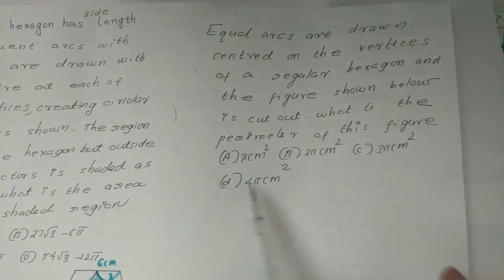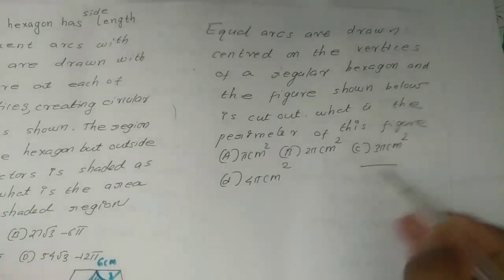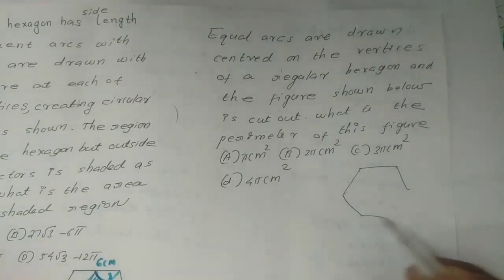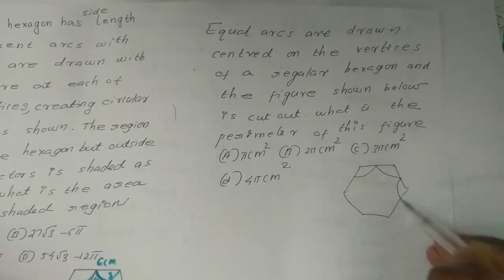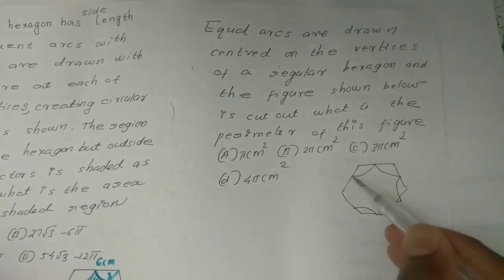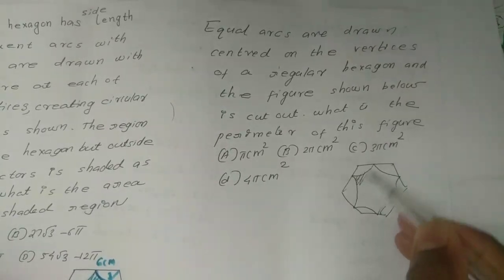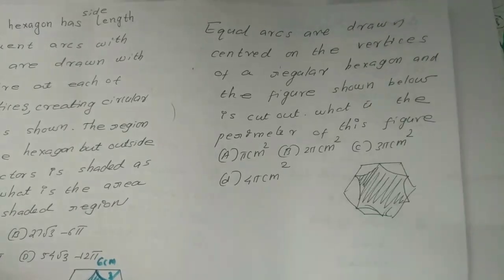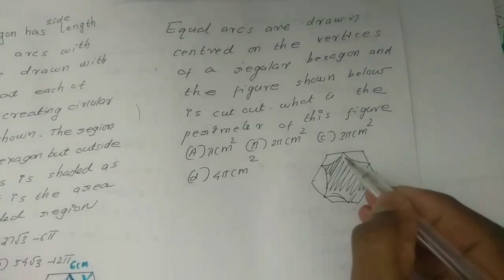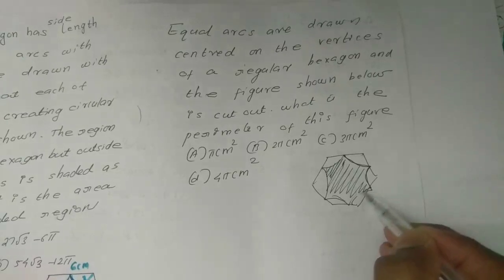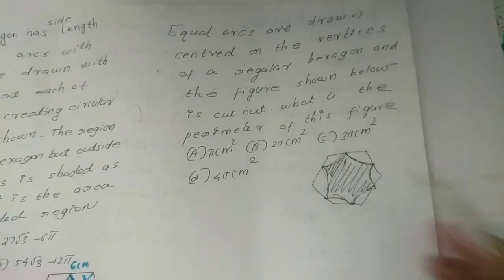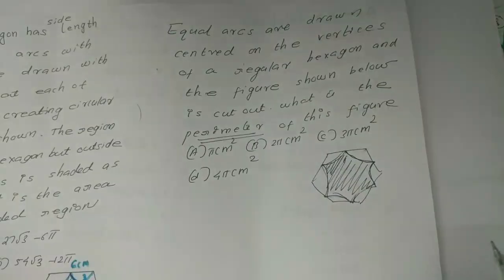perimeter of this figure? A: pi centimeter square, B: 2 pi centimeter square, C: 3 pi centimeter square, D: 4 pi centimeter square. This is how to shape a hexagon and the shaded region.